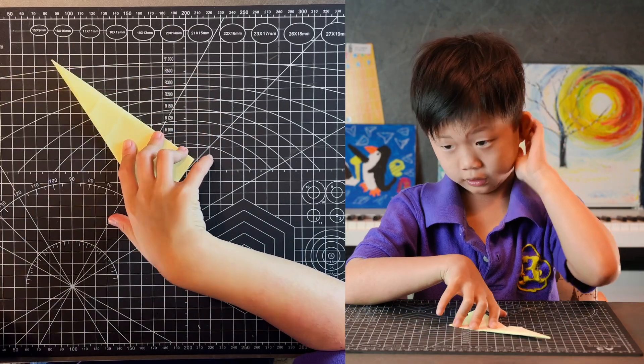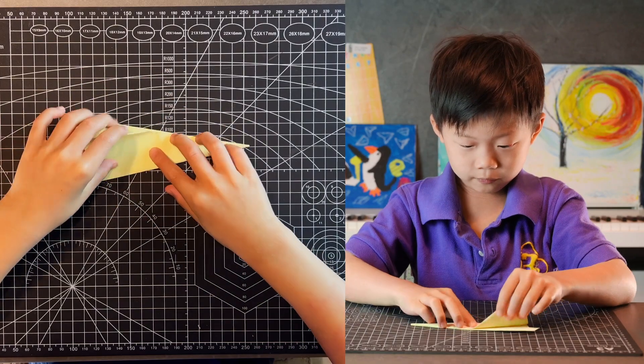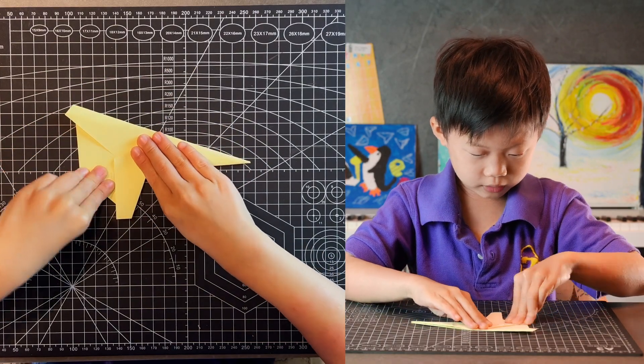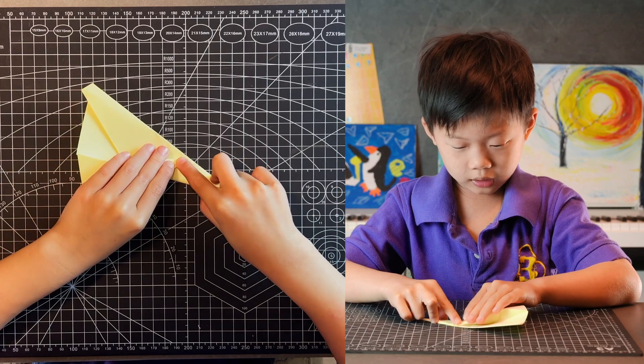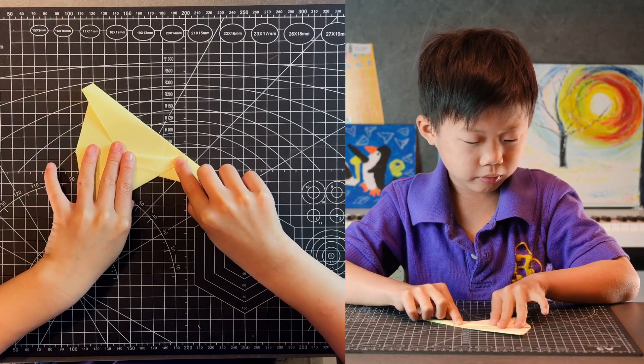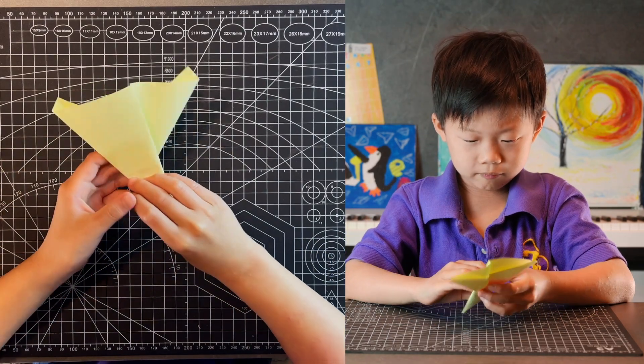Fold it in half again. And then fold from this crease point to right above that point. And then do the second crease point with the same technique.